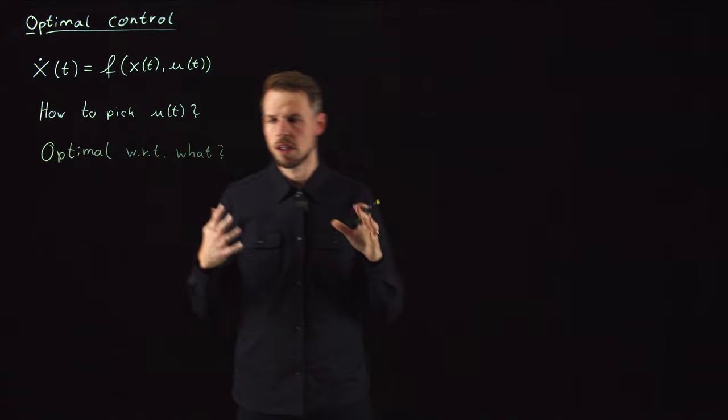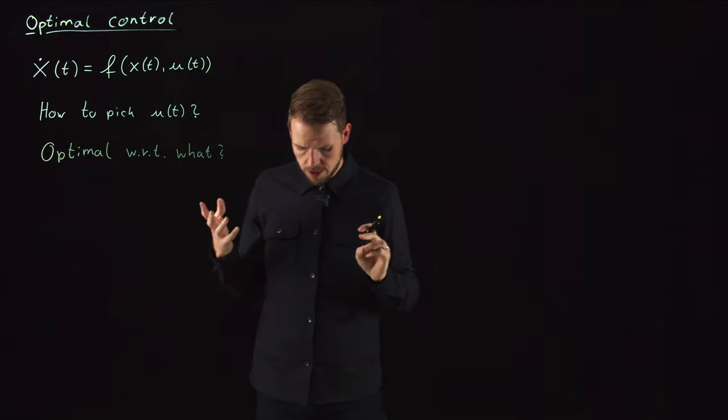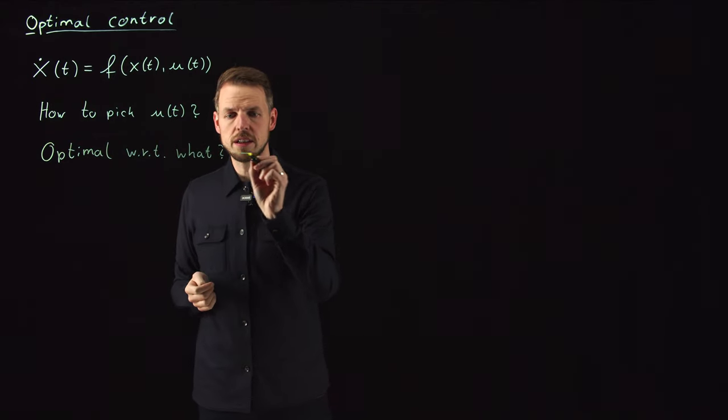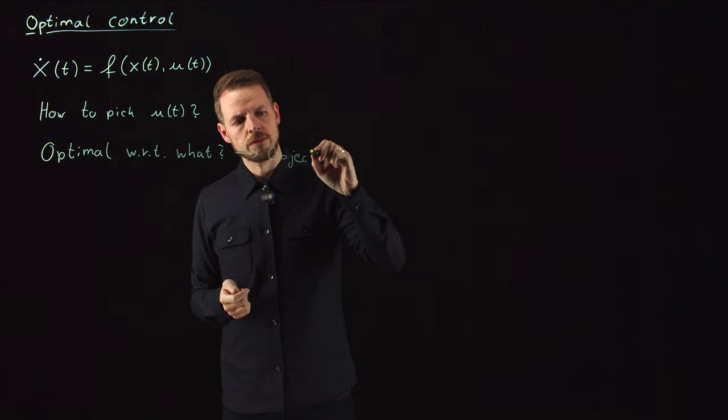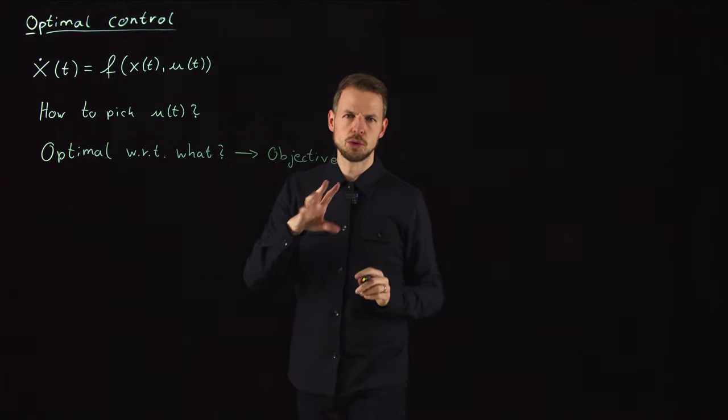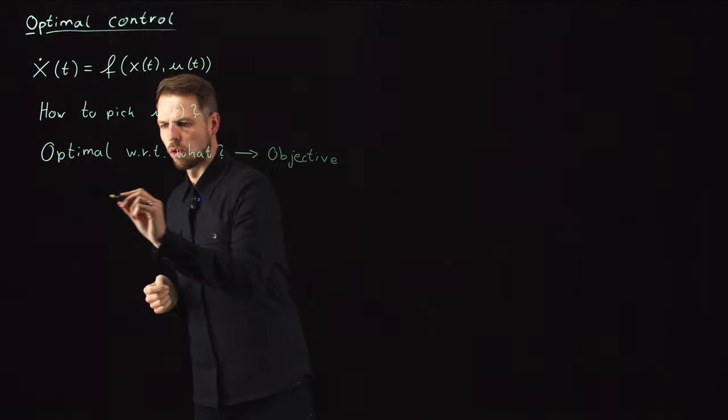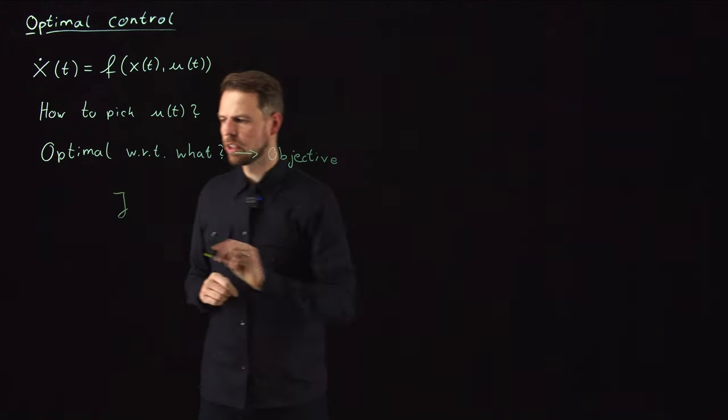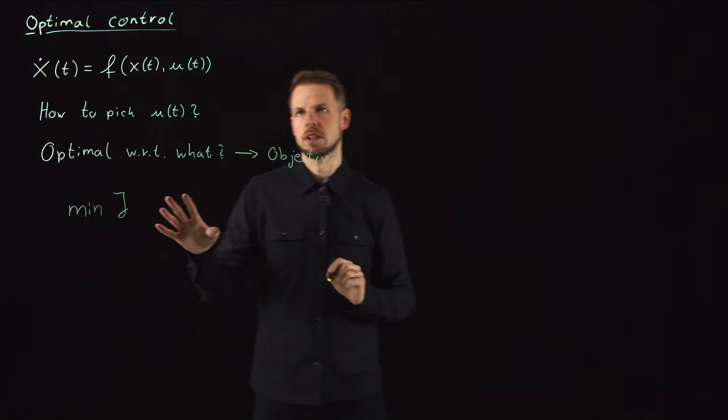What can be used to answer this is the definition of an objective function. We need to define an objective with respect to which we want to be optimal, and we'll use the letter J for this. We formulate our problem such that we want to minimize this J. One small remark: if we're talking about maximizing quantities, it's easy to swap the sign—a maximization problem can easily be transformed into minimization.